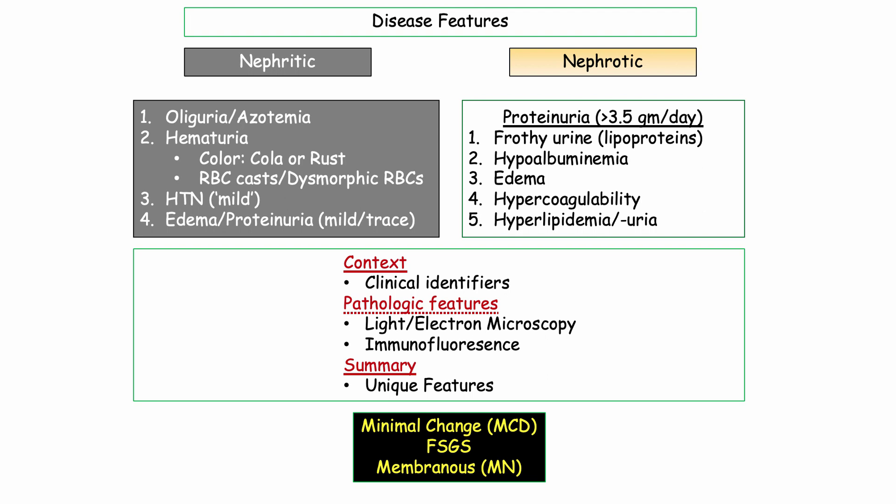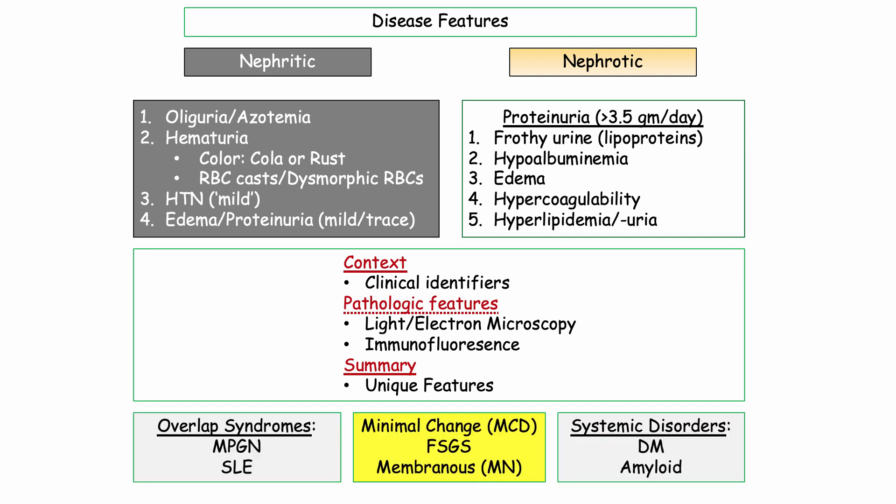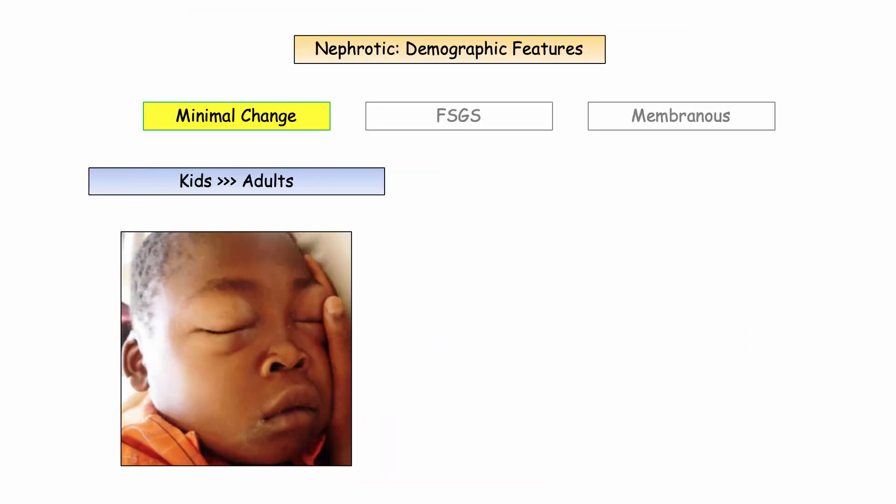In the remainder of this video, we will compare and contrast the three primary glomerular disorders, including minimal change disease, focal segmental glomerulosclerosis, and membranous nephropathy. We'll focus on the key clinical identifiers, the pathologic features, and conclude with a few miscellaneous tidbits you'll need to know for the boards. The overlap syndromes and systemic disorders, which can also present with nephrotic syndrome, will be presented in a separate recording.